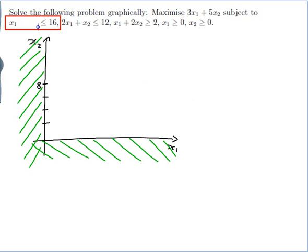If x2 is equal to 0 that gives me x1 is equal to 16. So my line is what I get when I join those two points together. Now I want it to be less than or equal to 16, so let me substitute in a point to see which side of the line I'm interested in. Substituting in the origin — putting 0 in for x1 and 0 for x2 — I get 0 is less than or equal to 16, which is true. So I want the bottom side of my line.